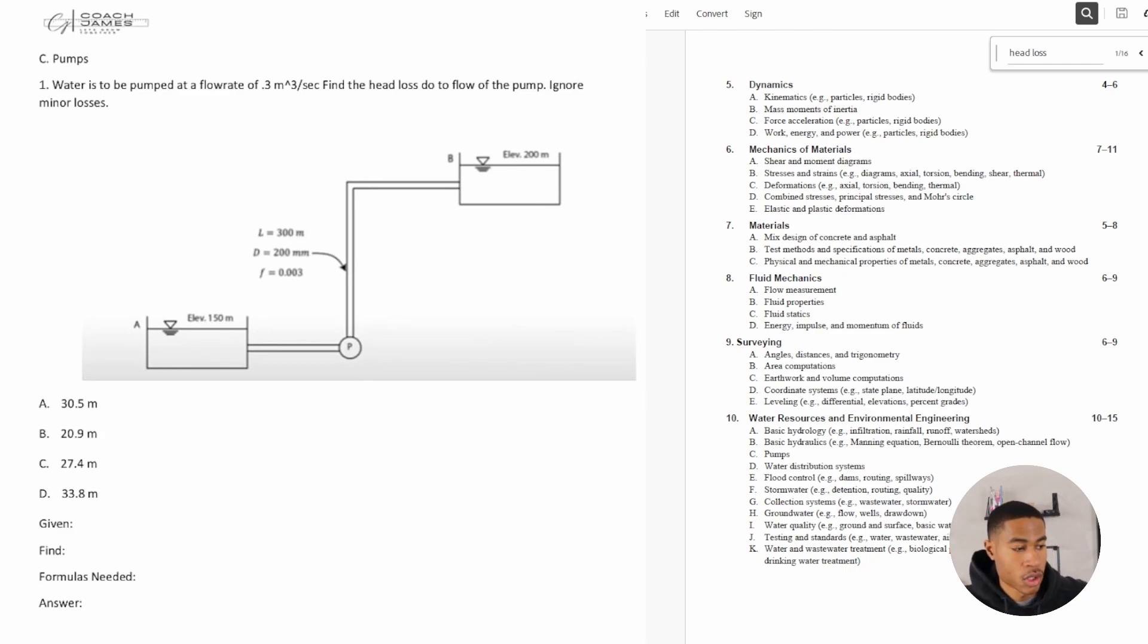Number one says water is to be pumped at a flow rate of 0.03 meters cubed per second. Find the head loss due to flow of the pump, ignore minor losses. Point A has the elevation, then it goes through the pump and shoots up. They give us the length of the pipe shooting up, the diameter of the pipe, and the f which is the friction factor.